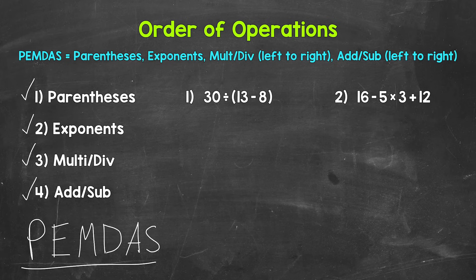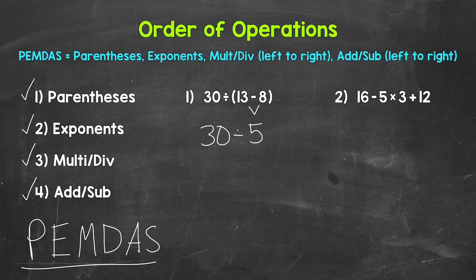Starting with number one, where we have 30 divided by, and then in parentheses, 13 minus 8. Let's work through the order of operations. Do we have any parentheses in this expression? Yes. So we start there. We have 13 minus 8 in parentheses — 13 minus 8 is 5. Then we need to bring down everything we did not use, so we have 30 divided by 5. 30 divided by 5 is 6. So our final answer is 6.